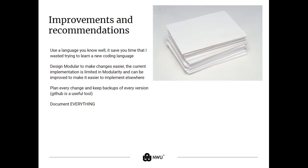If I can give any recommendation on how to improve this design, or for somebody trying to do something similar: use a language you know very well. Something like C works very well — it might be a bit harder to understand at the beginning but it works well for full implementations. Design modularly to make sure everything fits together nicely and that if you make changes, everything still works. Plan every change and remember to keep backups. It's really important to ensure that you can go back to previous versions if you do make a mistake, and document everything. You waste a lot of time if you don't document every single thing, because then later you'll have to try and figure out when you did it, where you did it, and how you did it.